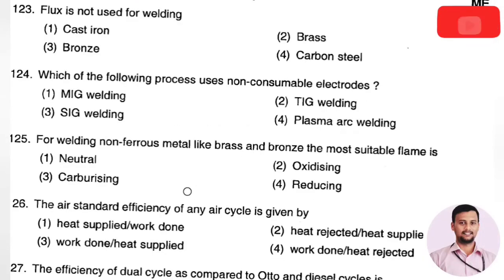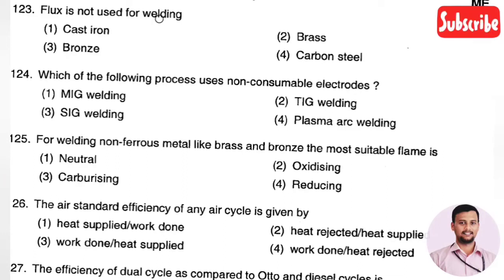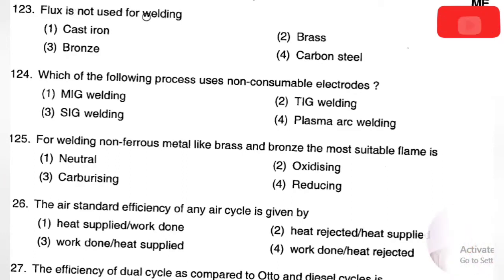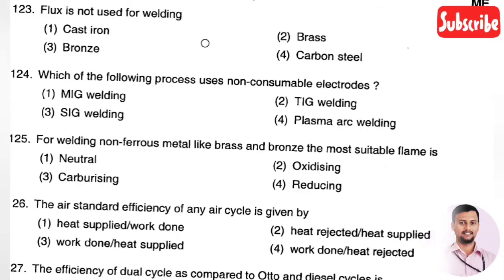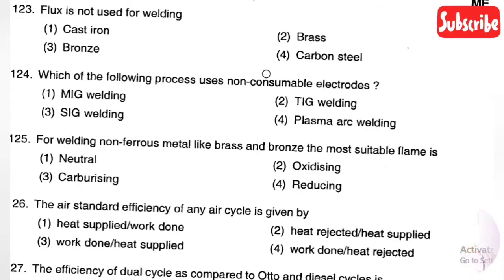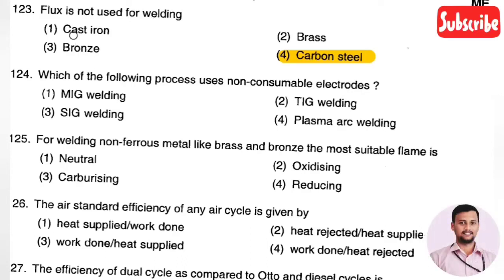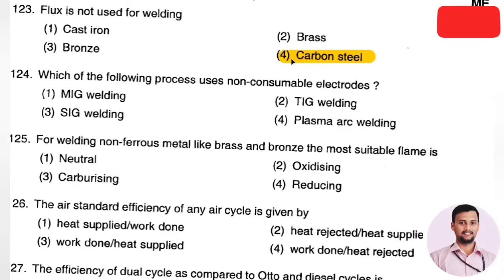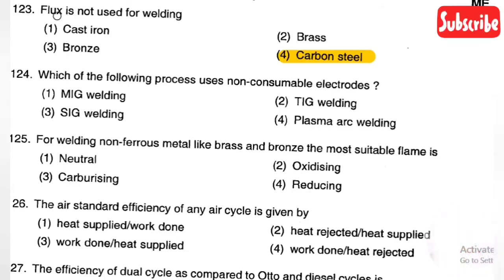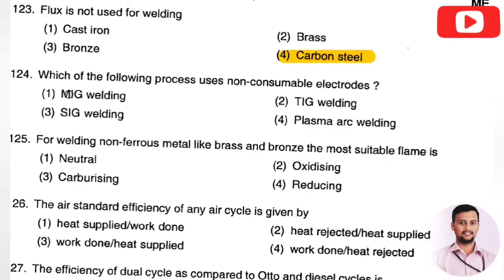The next question: flux is not used for welding which of the following? Options are cast iron, brass, bronze, and carbon steel. The right answer is Option 4, carbon steel. Cast iron, bronze, and brass are used as flux in the welding process, but carbon steel is not used as a flux in welding.